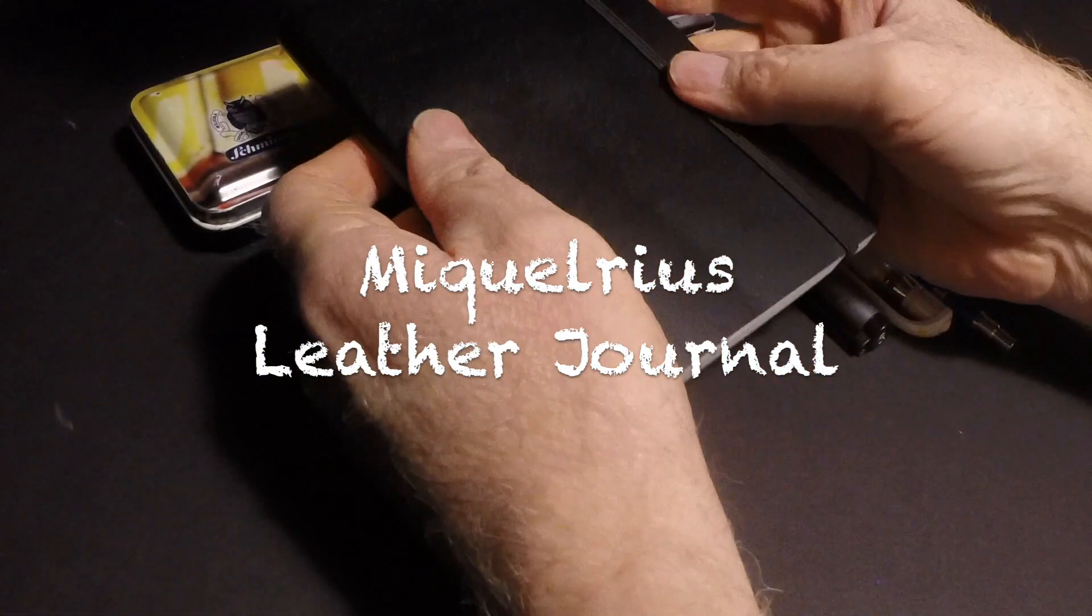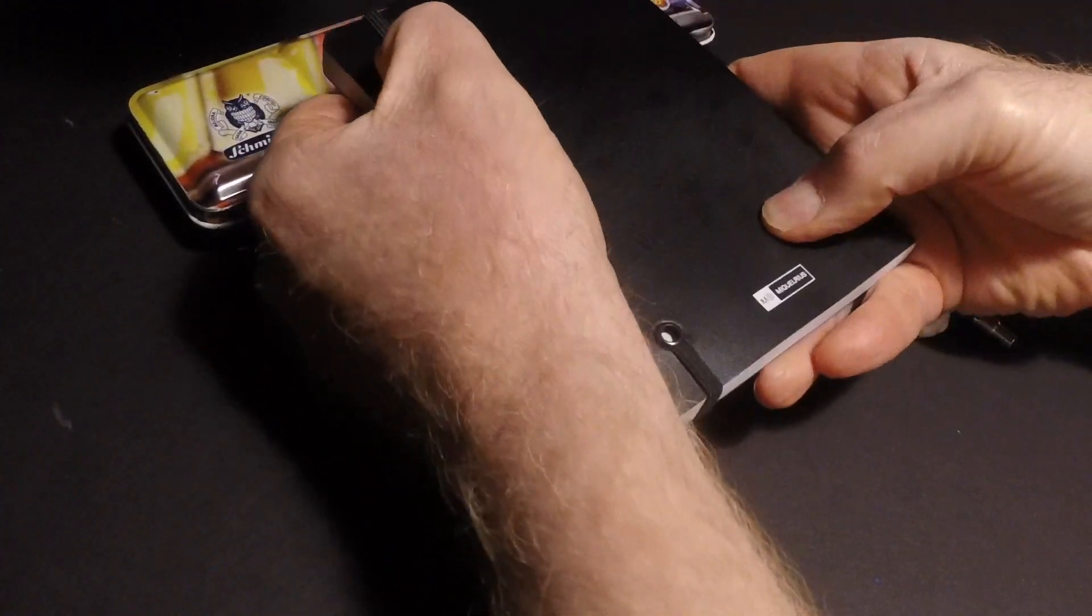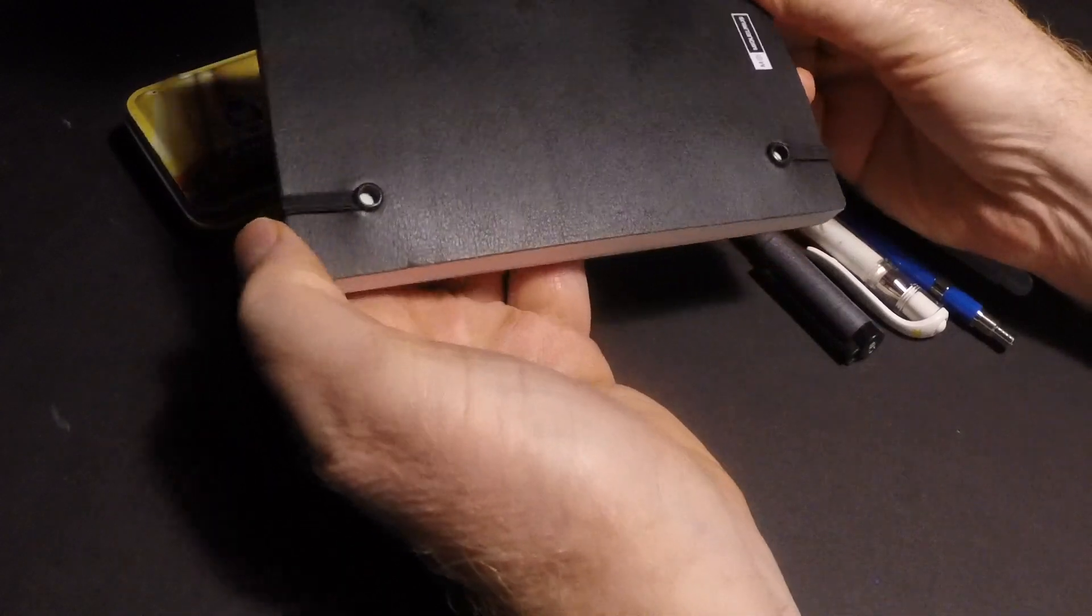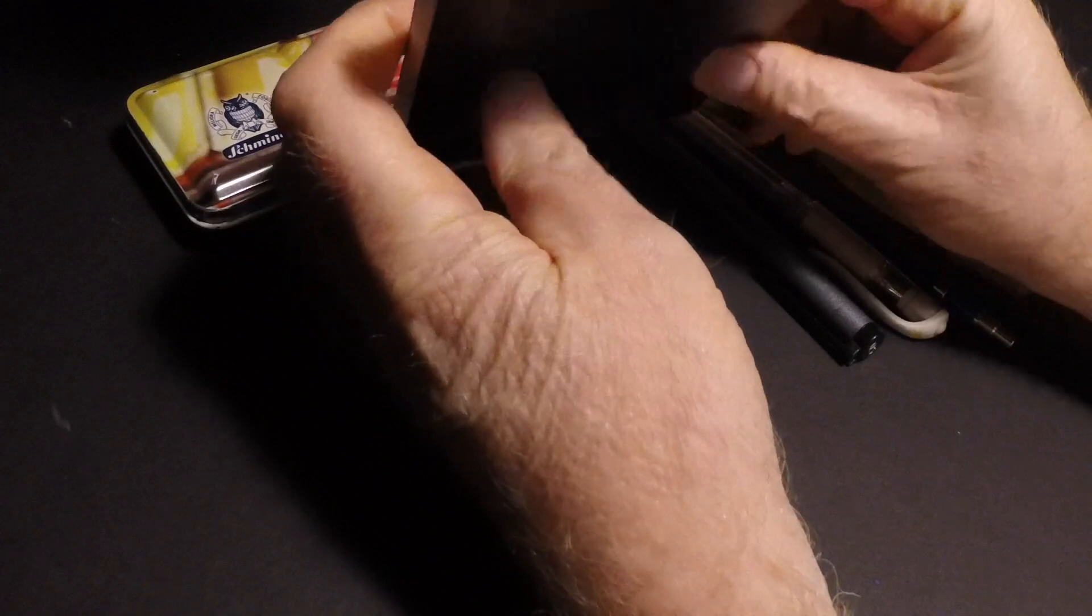Hey guys, it's Marty from OwingsArt.com and today I'm going to take a look at the Miguel Rios leather journal. This is a little, I think it's about a four and a half by six inch journal.